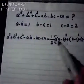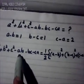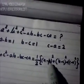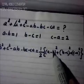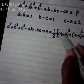For this, the formula used will be: a² + b² + c² - ab - bc - ca = ½[(a - b)² + (b - c)² + (c - a)²].